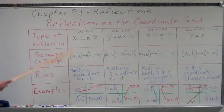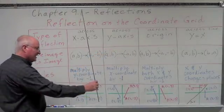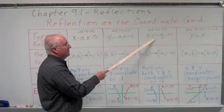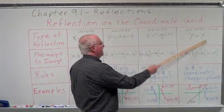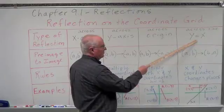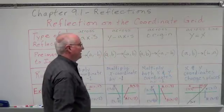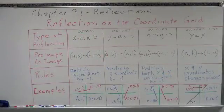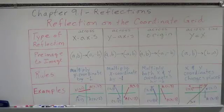So, reflections on the coordinate grid: we can reflect across the x-axis — a line of reflection; across the y-axis — a vertical line of reflection; across the origin — a point of reflection; and across the line y = x — with the rule that x and y coordinates change places. You need to know these — they'll be on your chapter test, six-weeks test, and your semester and end-of-year test. You need to know how to do reflections, what the rules are, how to make these changes, and how to recognize them.